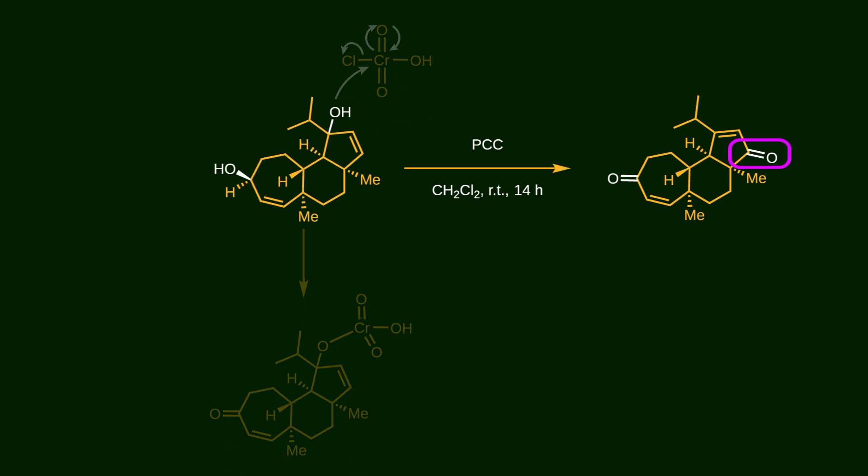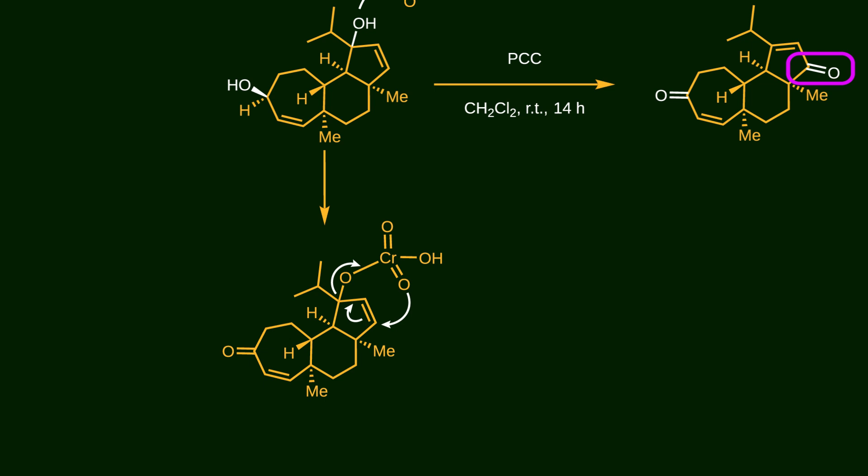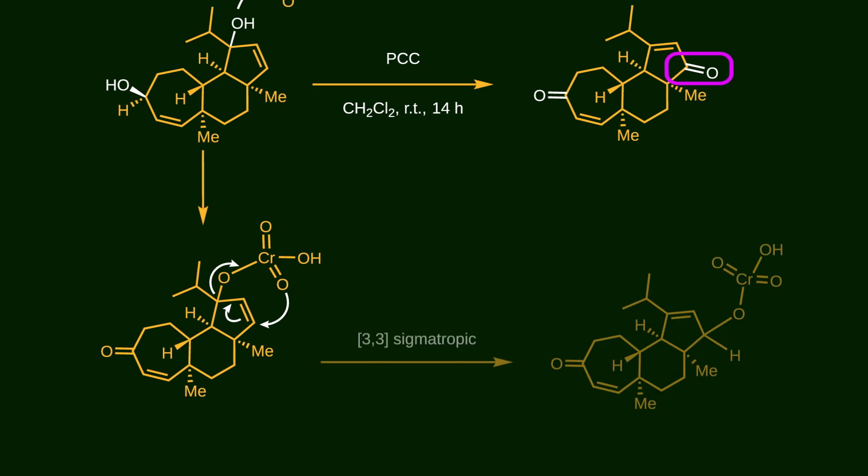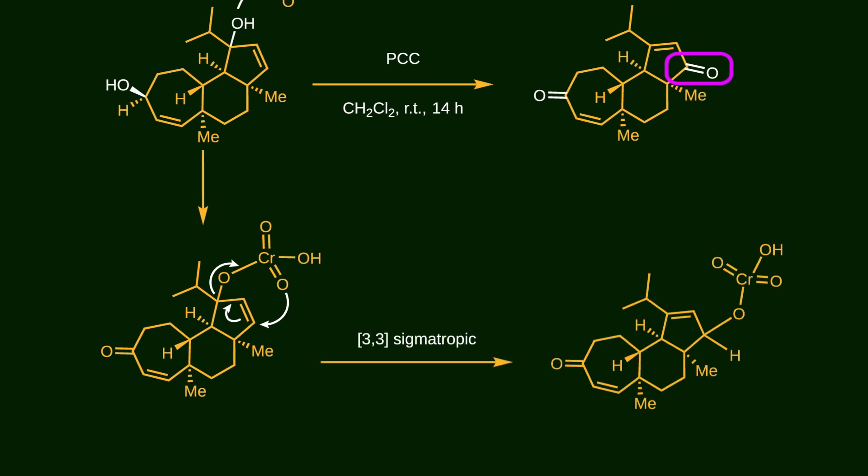Mechanistically, the oxygen atom of the alcohol attacks a chromium atom, forming a chromium-oxygen bond. Then, this oxygen attacks a nearby double bond, triggering a 3,3-sigmatropic rearrangement. Following that, an alpha hydrogen assists in breaking the chromium-oxygen bond, resulting in formation of a new carbonyl group.